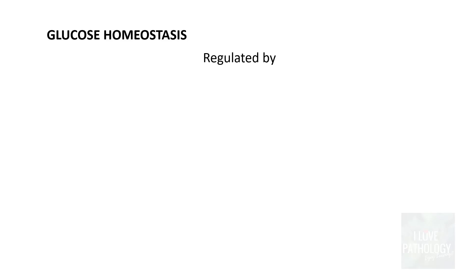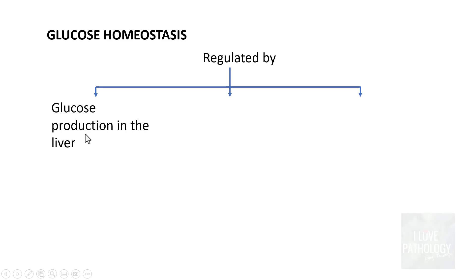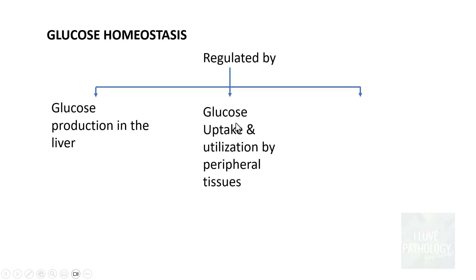What do we mean by glucose homeostasis? We all know that homeostasis is the maintenance of constancy in the internal environment. In the context of glucose homeostasis, it means maintenance of constant levels of glucose in the internal environment. This glucose homeostasis is very tightly regulated by three interrelated things: first, the production of glucose in the liver; second, the uptake and utilization of glucose by peripheral tissues, predominantly skeletal muscle tissue.